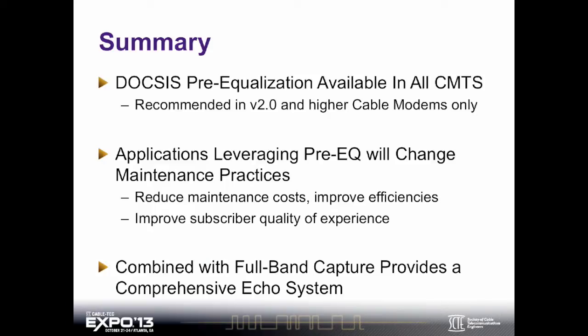So we have this information — what do we do now? This is very, very powerful. DOCSIS pre-equalization is something that's available in all CMTSs. We really recommend using DOCSIS 2.0 or higher cable modems when using pre-equalization, because DOCSIS 1X cable modems only have eight pre-equalizer taps, whereas DOCSIS 2.0 modems have 24 taps. And 24 is better than eight — it gives you better resolution when doing your pre-equalization and pre-distortion in the upstream.